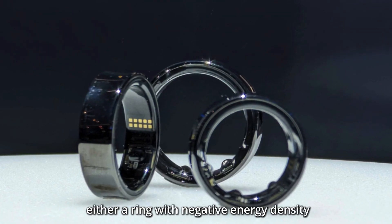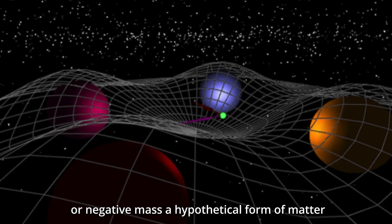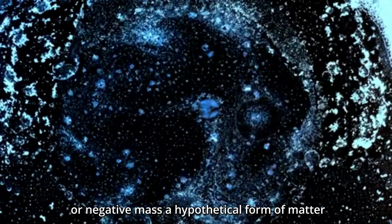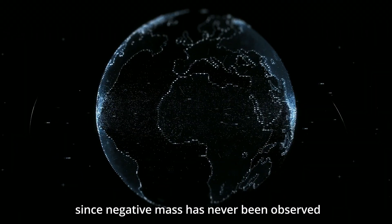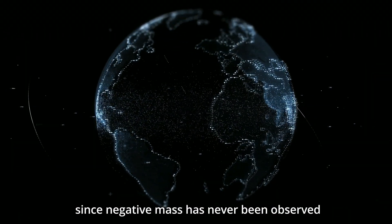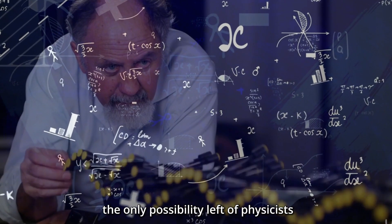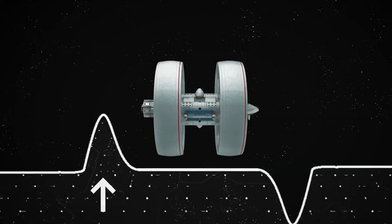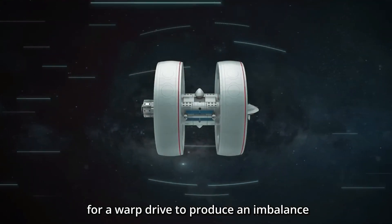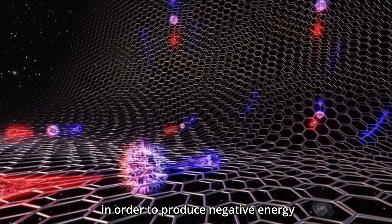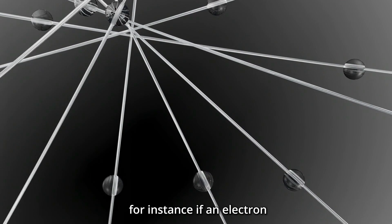Either a ring with negative energy density or negative mass, a hypothetical form of matter, would be necessary for the warp drive to function. Since negative mass has never been observed, the only possibility left to physicists is negative energy. A massive amount of mass would be needed for a warp drive to produce an imbalance between particles and antiparticles in order to produce negative energy. An imbalance would result, for instance,